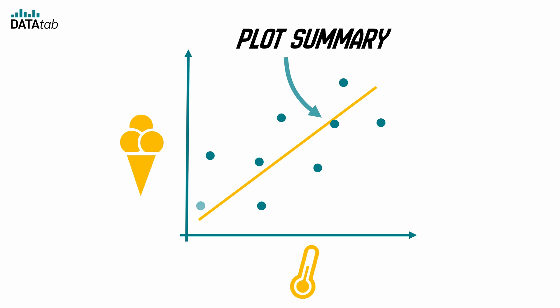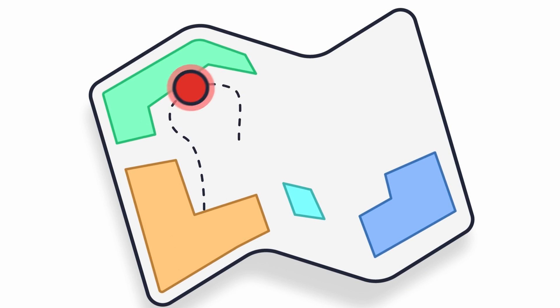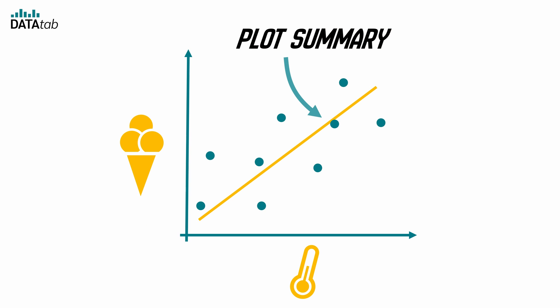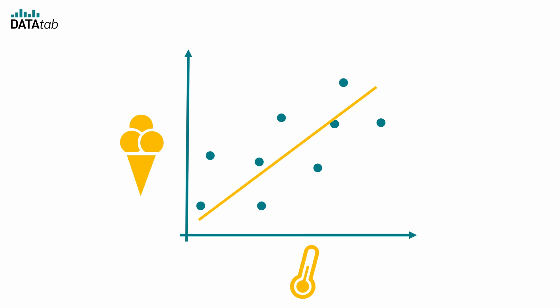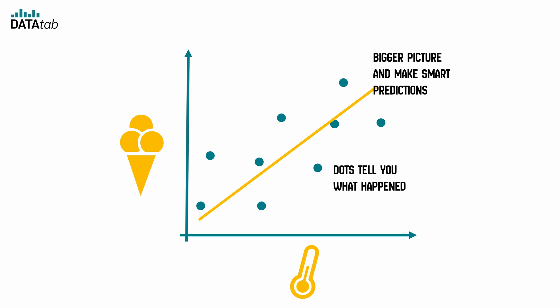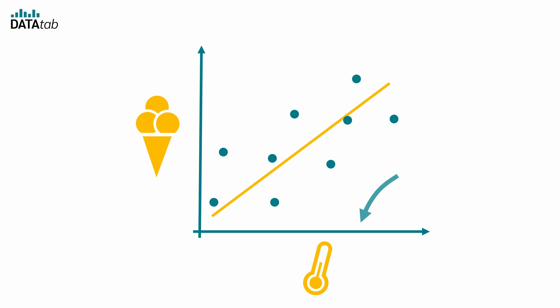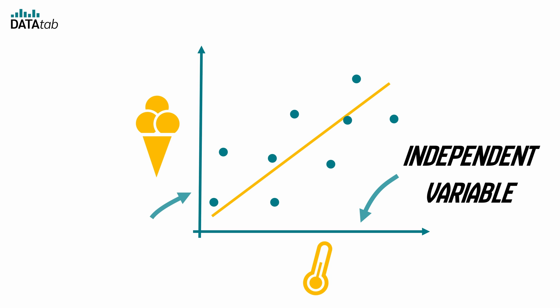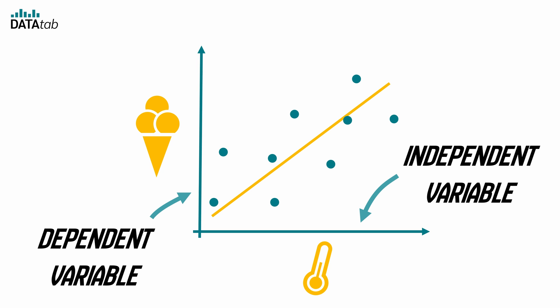That's where the magic of the line steps in. The line is like the plot summary that ties all those little stories together into one clear narrative. Instead of guessing where the next dot might land, the line gives you a straight path to follow — like a GPS for your data, helping you predict future sales with much more confidence. If you know the temperature for tomorrow, the line will give you a good estimate of how many ice cream scoops you will sell. While the dots tell you what happened, the line helps you see the bigger picture. The variable on the x-axis is called the independent variable or predictor, and the variable on the y-axis is called the dependent variable or response. So we have one predictor, one response and a line that sums it all up.